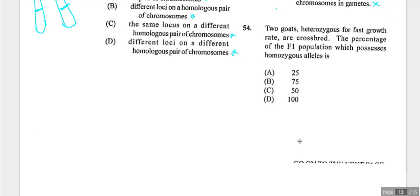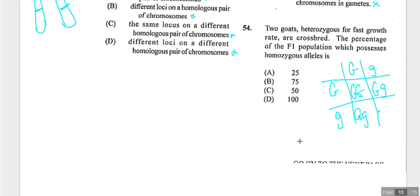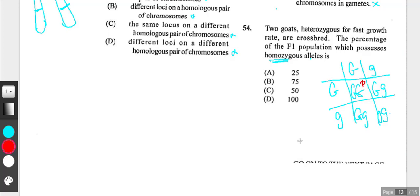Question fifty-four: two heterozygous goats for fast growth rate are crossed. Using Gg × Gg in a Punnett square gives GG, Gg, Gg, and gg. Homozygous alleles are GG and gg — two out of four, which is 50%. Answer is C.